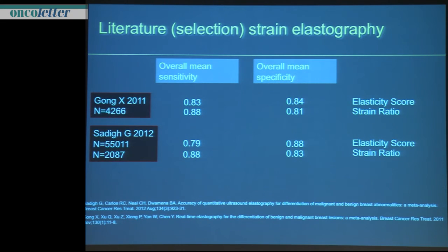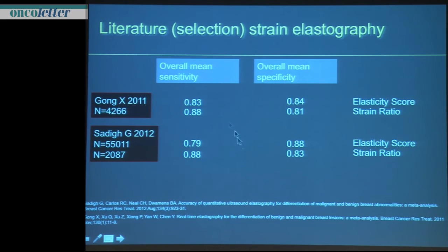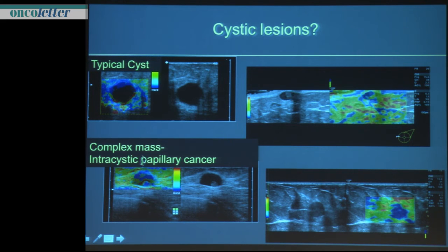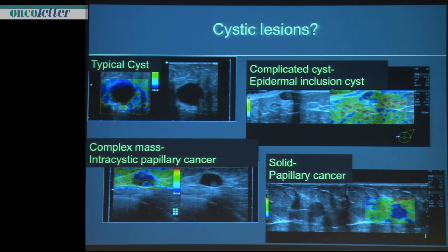Now about clinical studies — I will focus on meta-analyses. The meta-analyses from Gong and Sadiq show that the strain ratio is better compared to the elasticity score alone, with high sensitivities and specificities. Here are some clinical examples. This is a typical blue-green-red artifact — a cyst. Here we have an inclusion cyst. And this is a complex mass — you would probably also assess such a lesion according to B-mode characteristics.